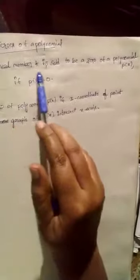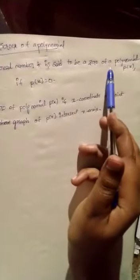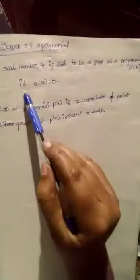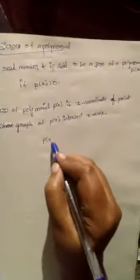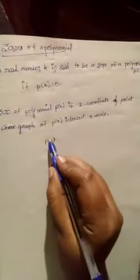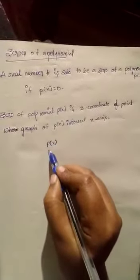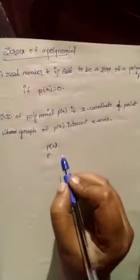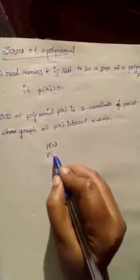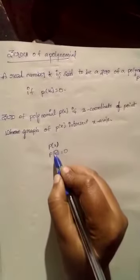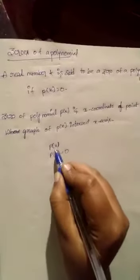Zeros of a polynomial. What is the zero of a polynomial? A real number k is said to be a zero of a polynomial p of x if p of k is equal to zero. At which point p of x will become zero — that point k is the zero of the polynomial function p of x.